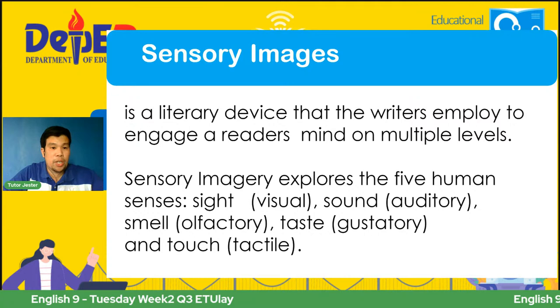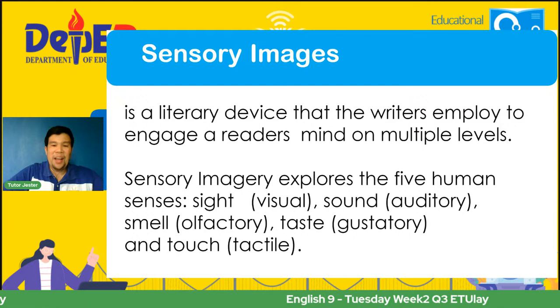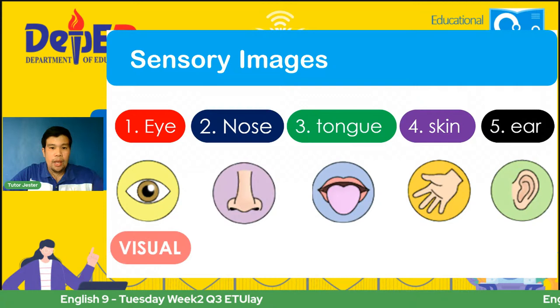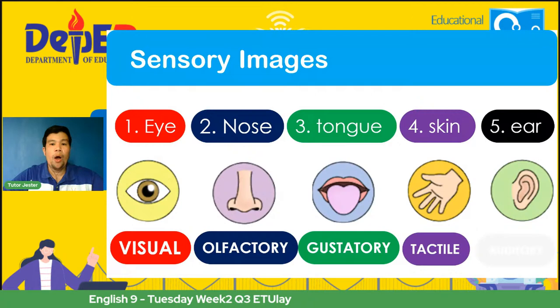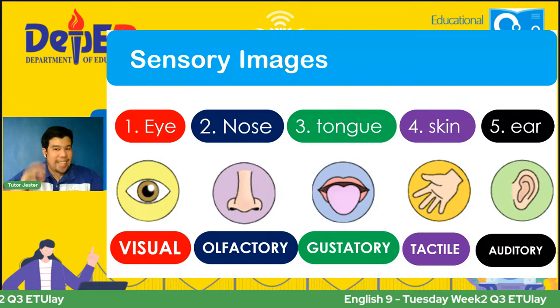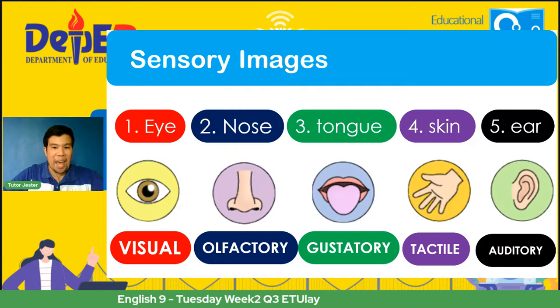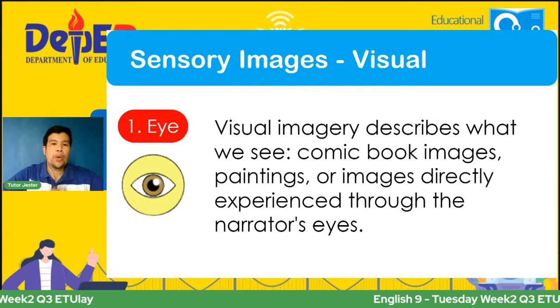So we got: visual, olfactory, gustatory, tactile, and auditory. Tandaan niyo yan kasi meron tayong activity maya-maya. Let's go one by one. First, we got the eye — and specifically, it's the visual. What is visual? Visual imagery describes what we see. It includes literary pieces or works na comic book images, paintings, or images directly experienced through the narrator's eye.